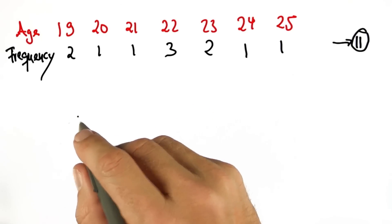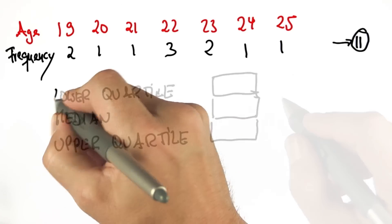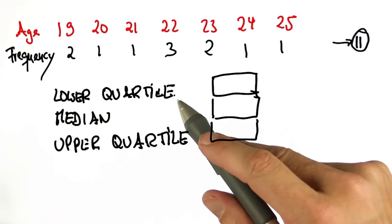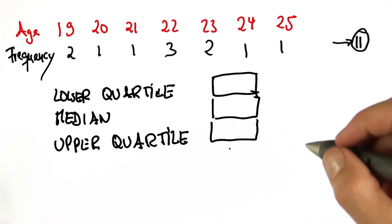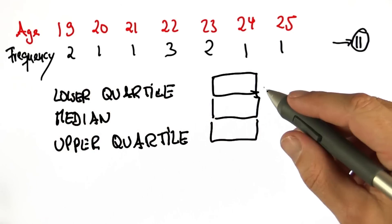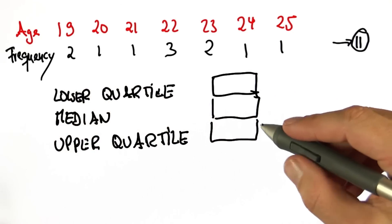So I'm going to ask you the obvious question now. Give me the lower quartile, the median, and the upper quartile in these three boxes over here.